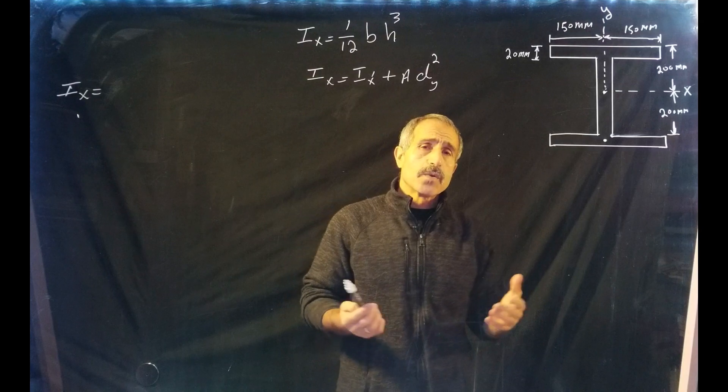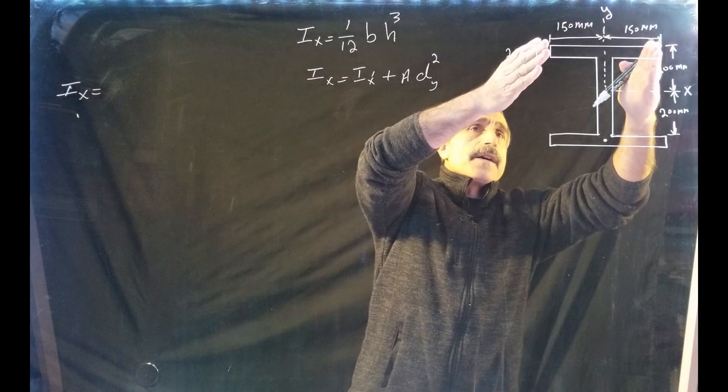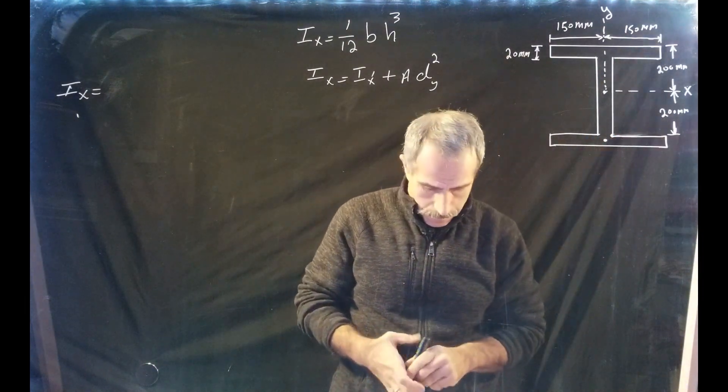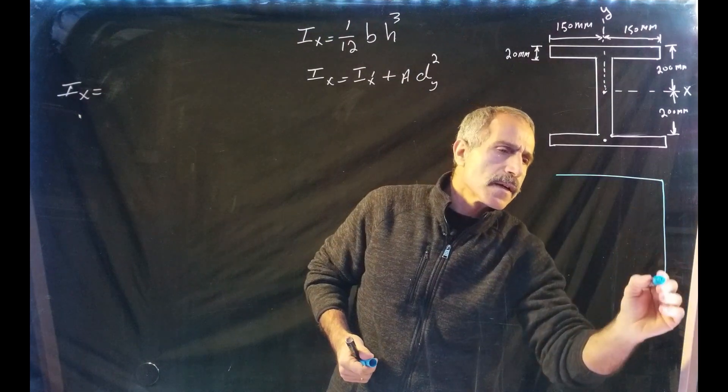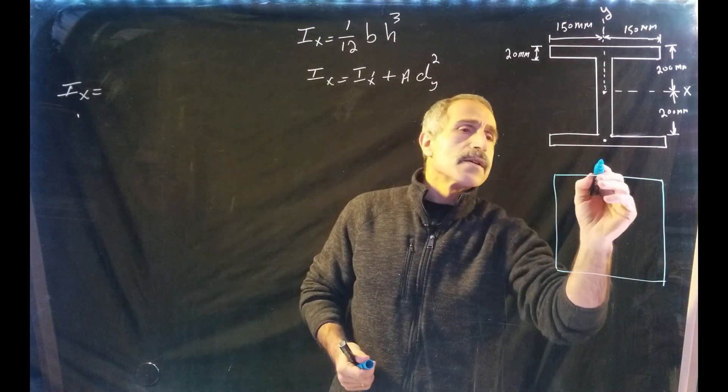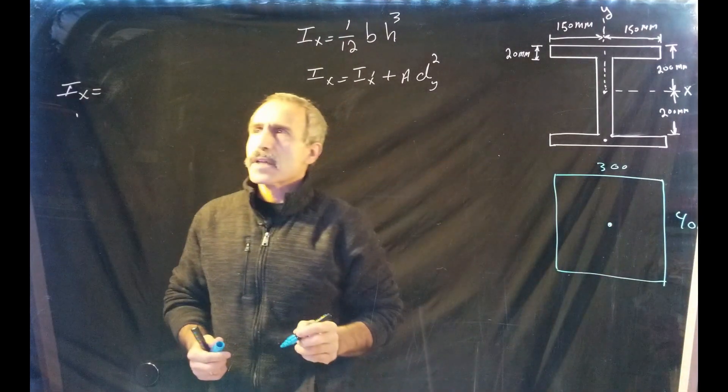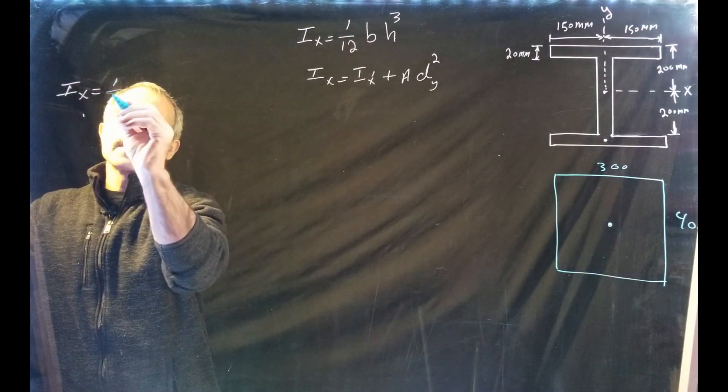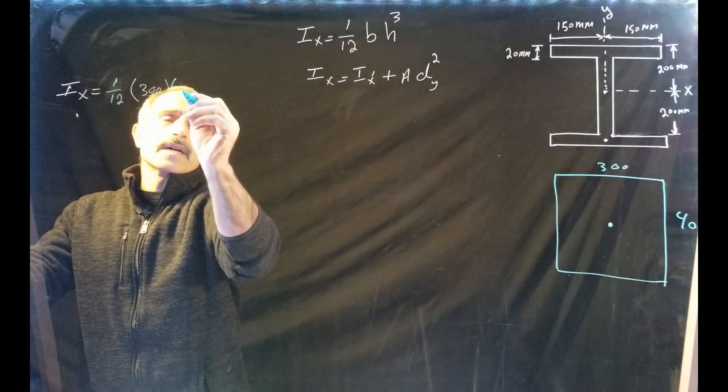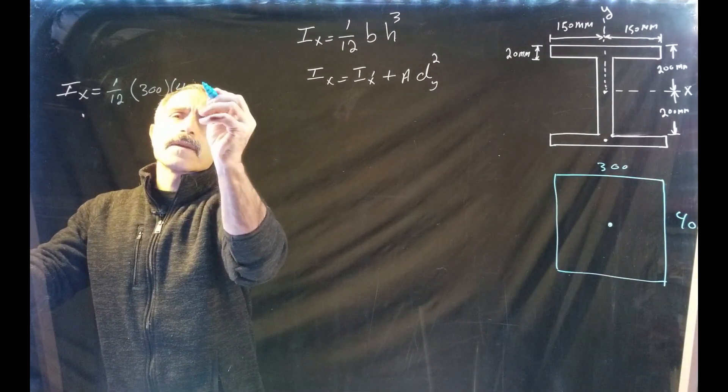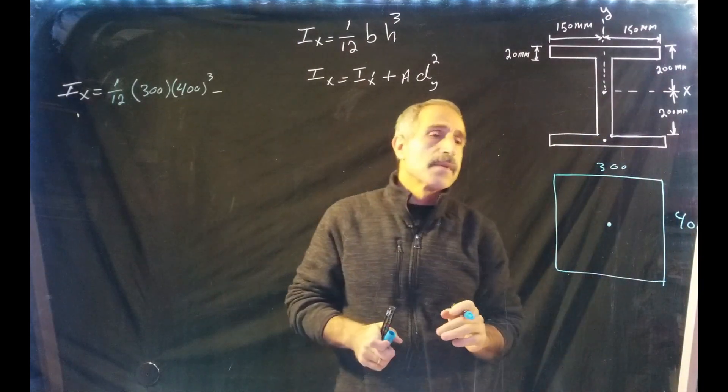All right, let's do that. Ix is equal to - so this whole block right here, it will be basically this big block right here, and it's 300 by 400, and the centroid is right here. So it's going to be Ix equals 1/12 times 300, again b times h cubed, and your h will be 400 cubed, minus - now let's take out these two empty spaces right here.